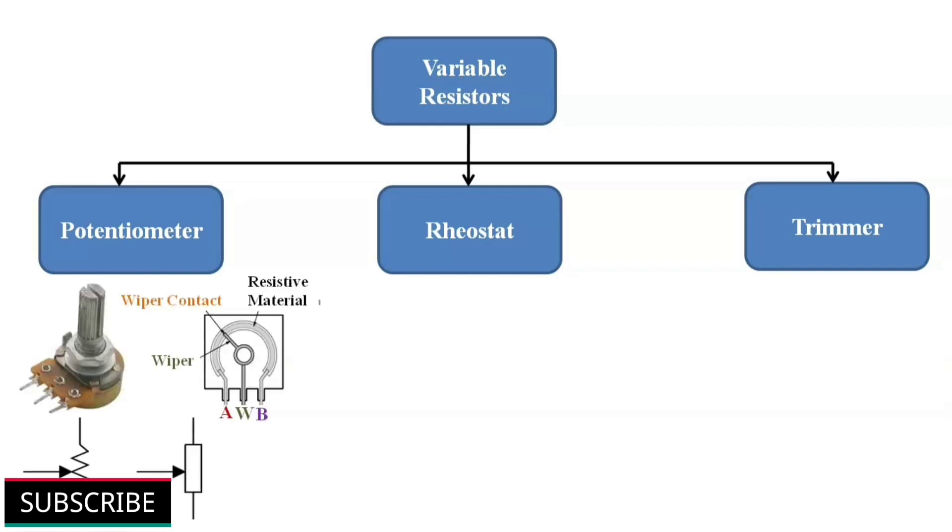A potentiometer is simply called as a pot. It is a three terminal device. The resistance between two terminals A and B is constant, while the middle terminal W is connected to moving contact wiper. The value of resistance can be changed by rotating the shaft, which moves the wiper contact. Potentiometers are mostly used as a volume controller in TV sets and music systems.